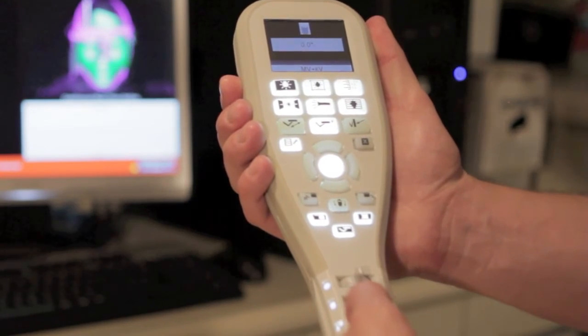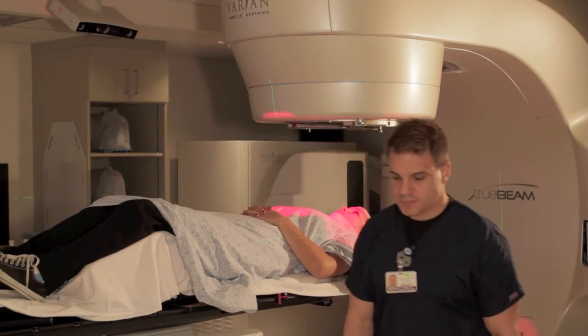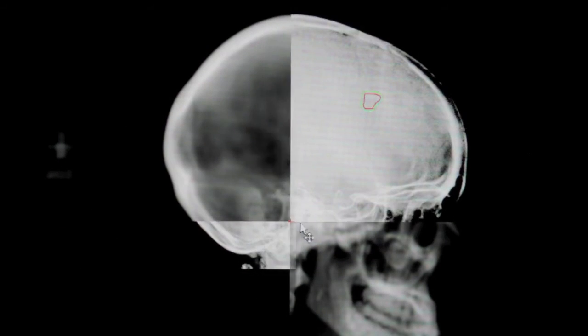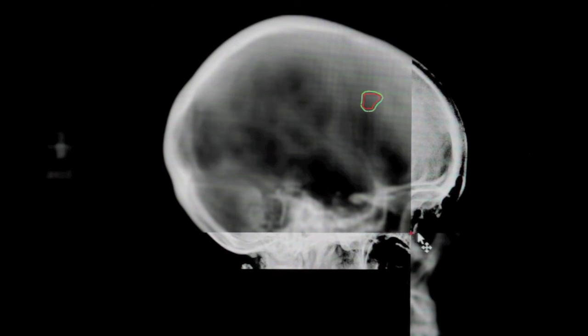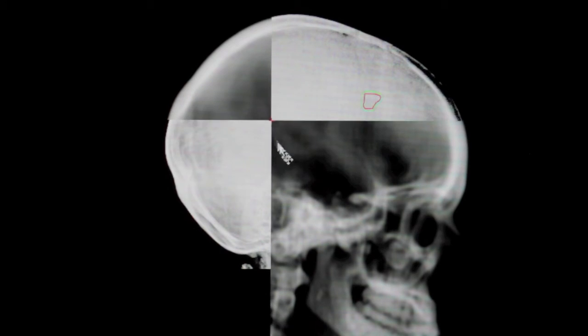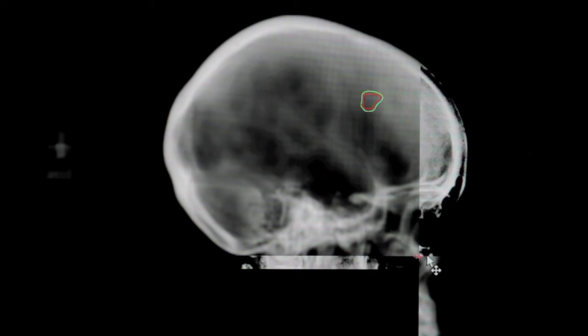Now that the patient is all zeroed in with AlignRT, we are going to use radiographic imaging for any final corrections. Here at UCSD, we first use KVKV matching to correct for any gross rotational errors. It saves exposing the patient to radiation, as it allows us to avoid performing repeat cone beam CT imaging.